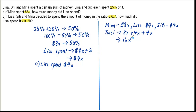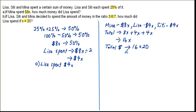We are told that X equals 20, so based on this information we can find the total amount of money. The total amount of money would be 16 times 20, since X is 20. This gives us 320 dollars. So this is the total amount of money that they have together.